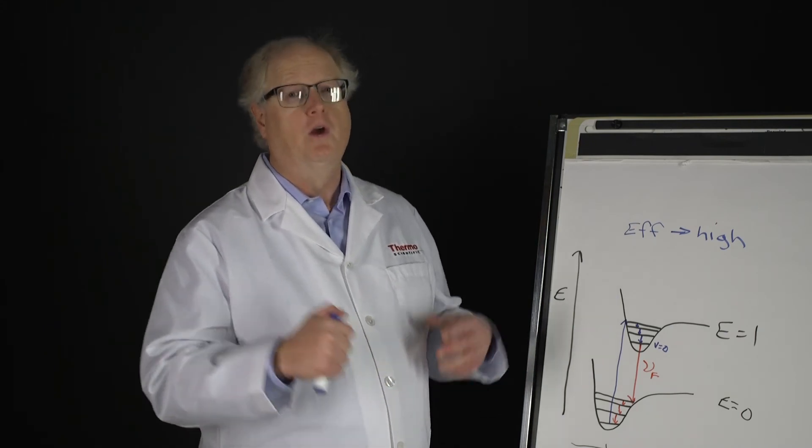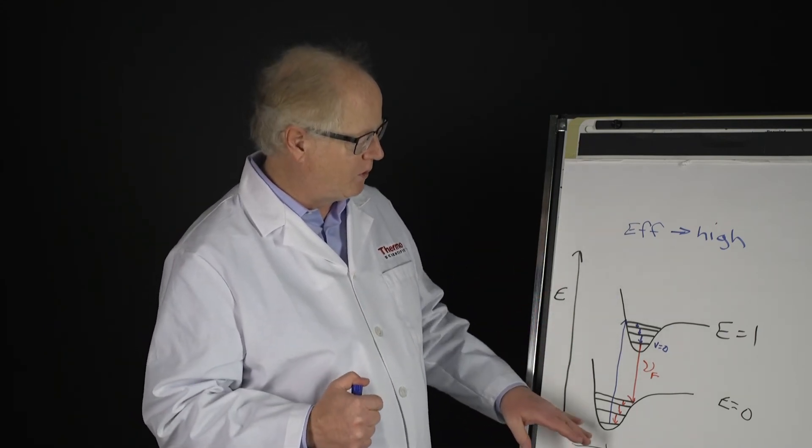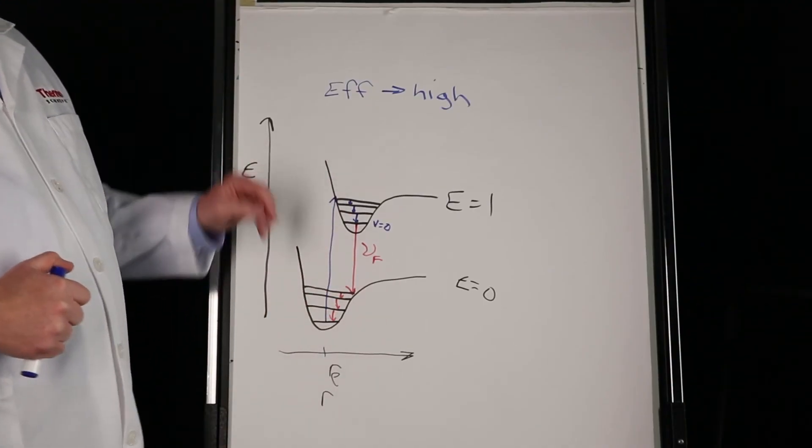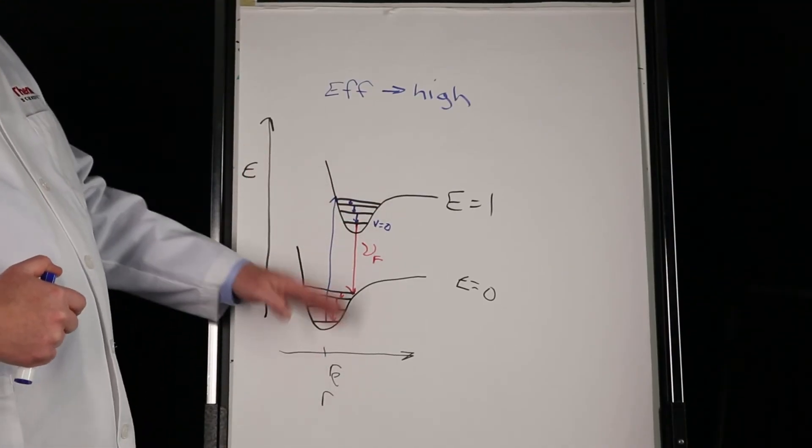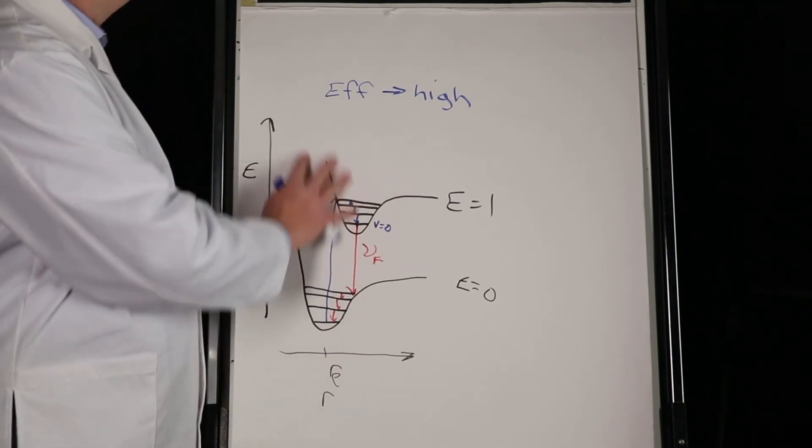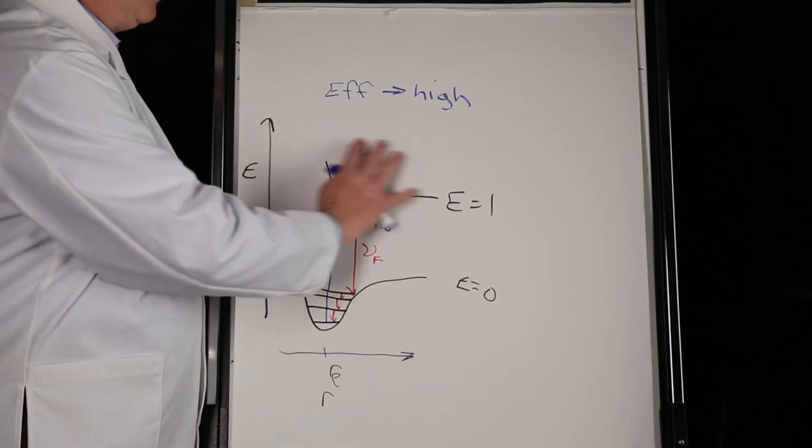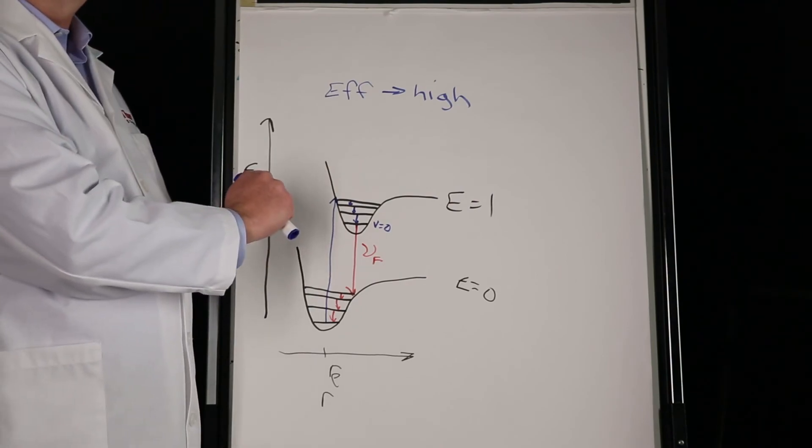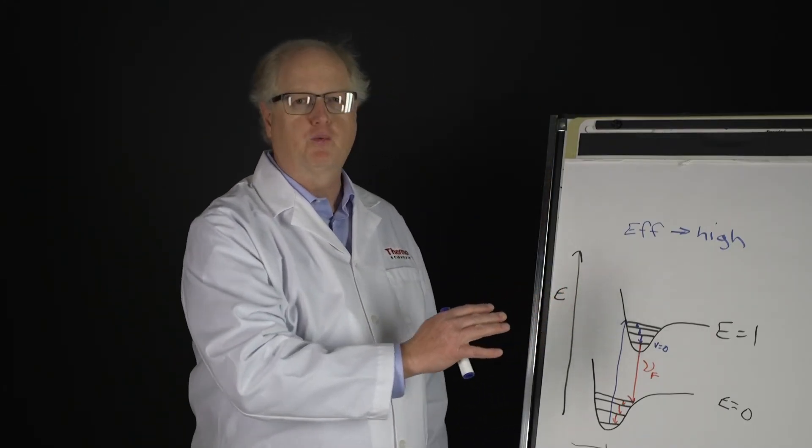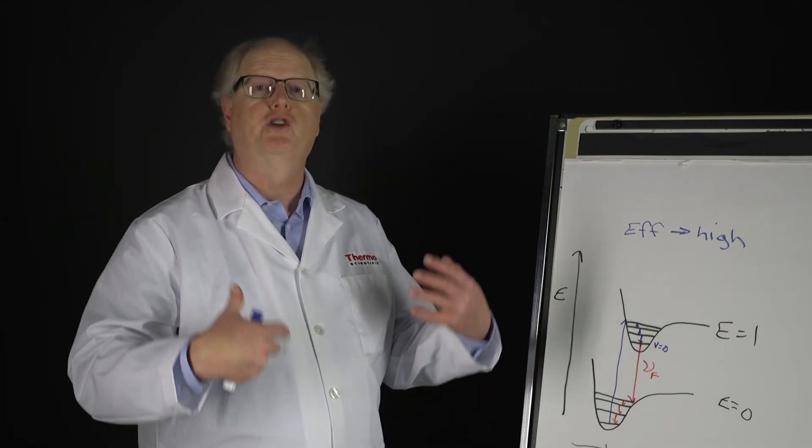Now there are several things we can do. We'll talk about those as we go on, but just to kind of give you a preview: one thing you can do is try and burn out the electronic level, the electronic transition. You hit it with enough photons that you bleach it. It's called photobleaching. You bleach out the electronic excitation.